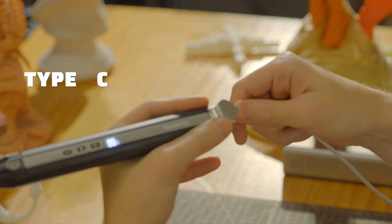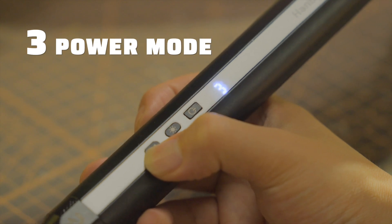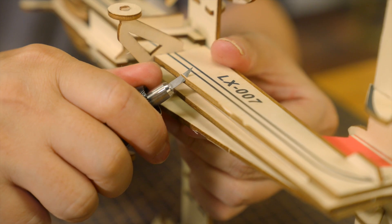Type-C fast charging keeps everything powered up and ready to go. You can easily tailor the power to your cutting needs with three power modes to deliver perfect results.